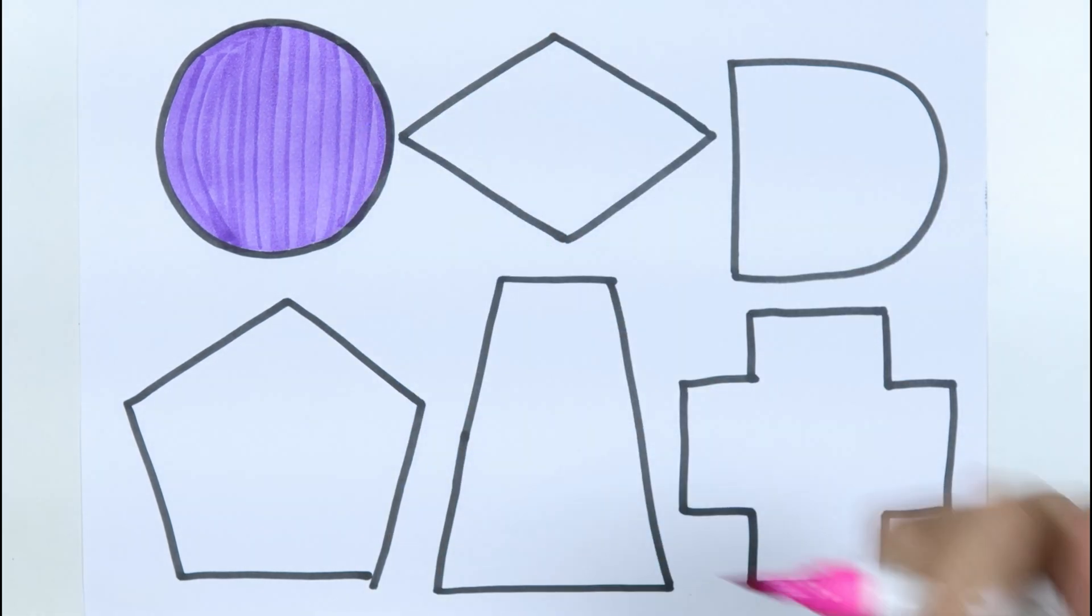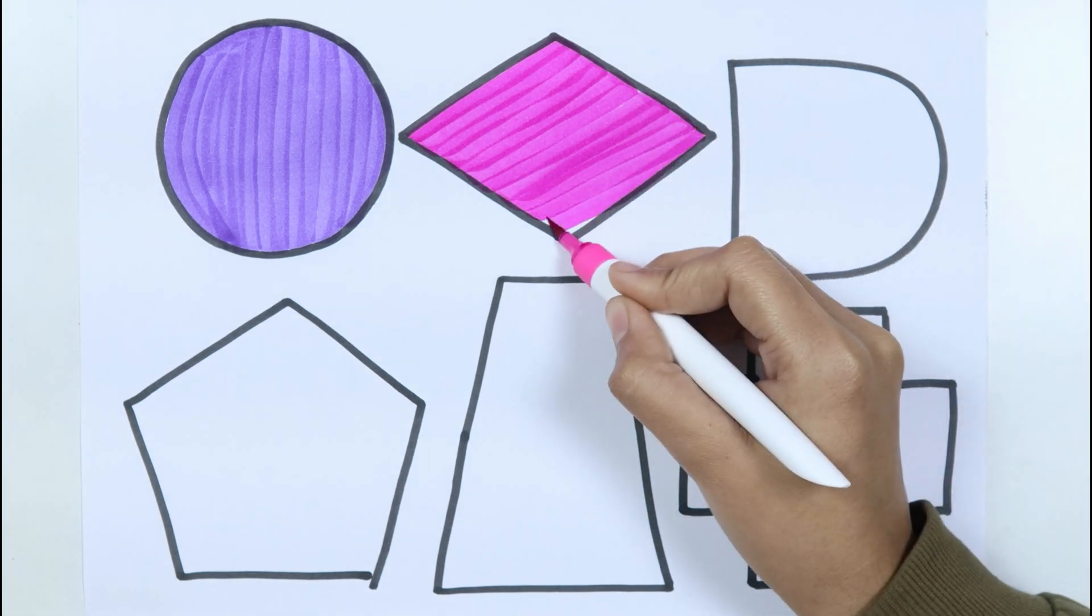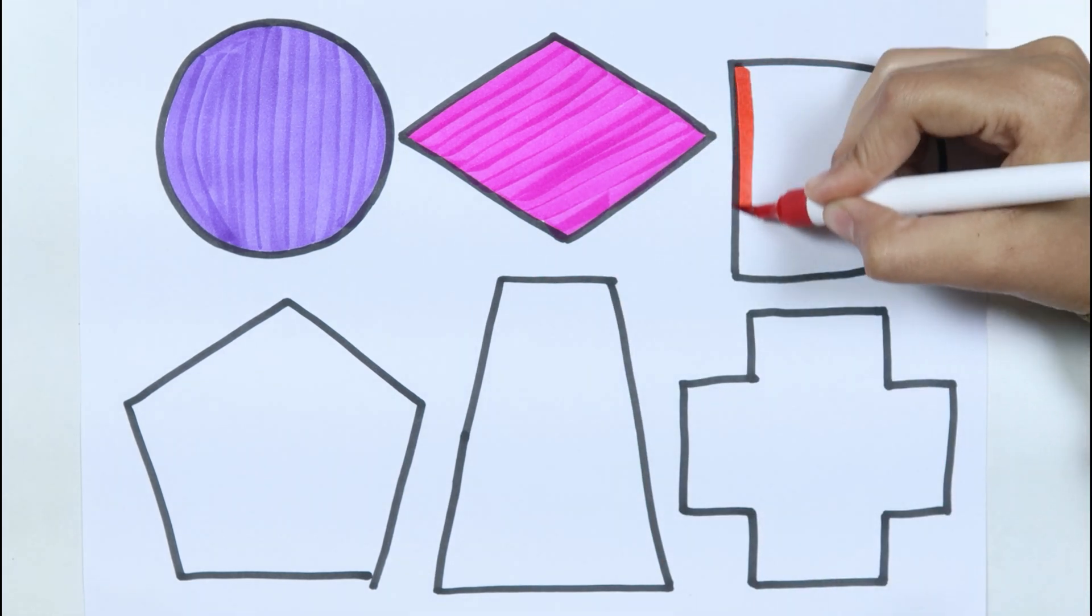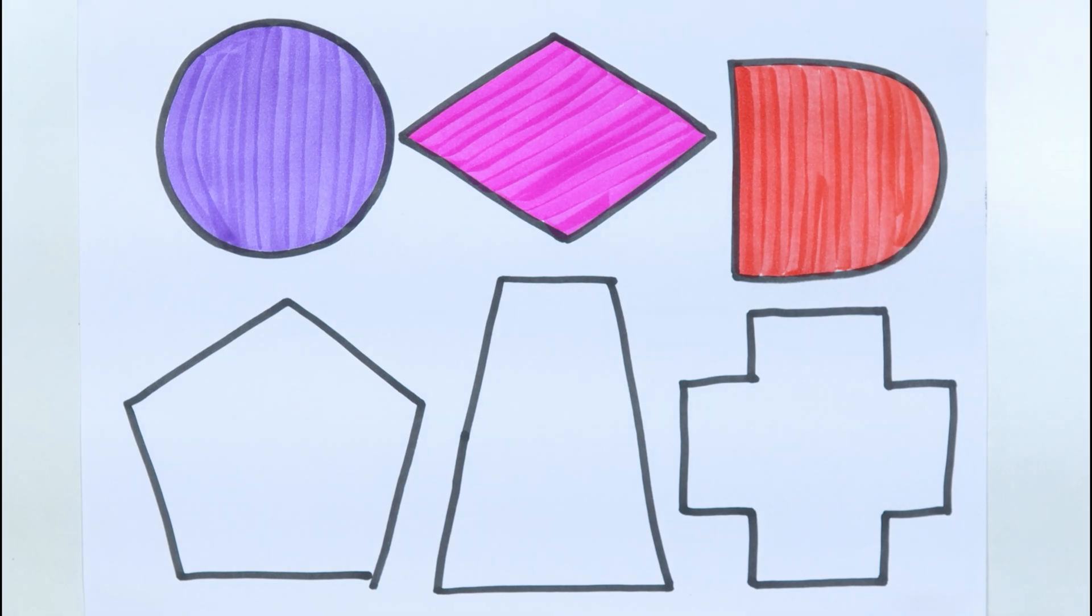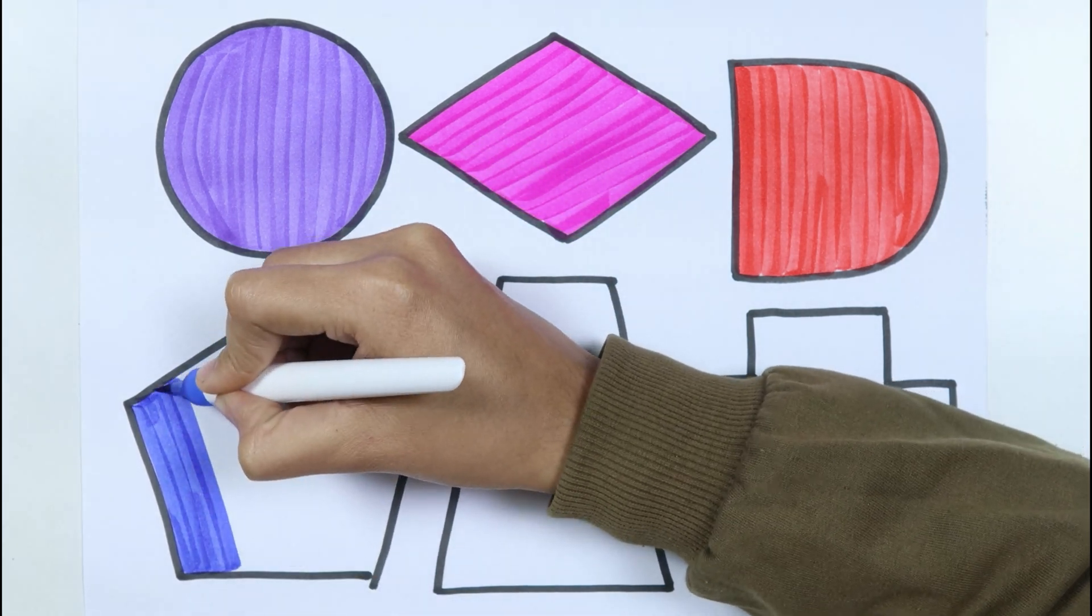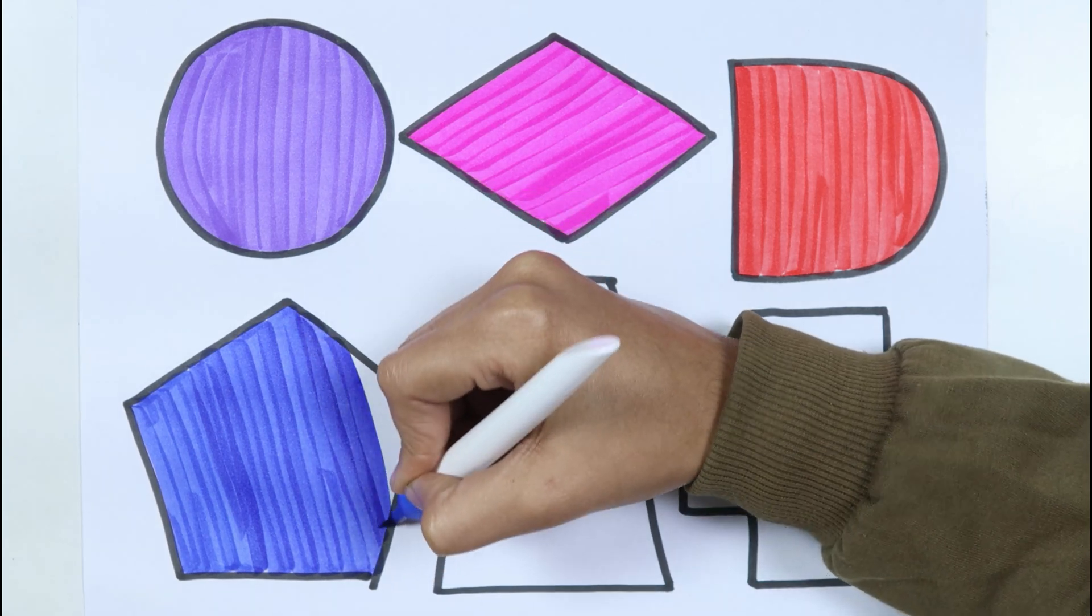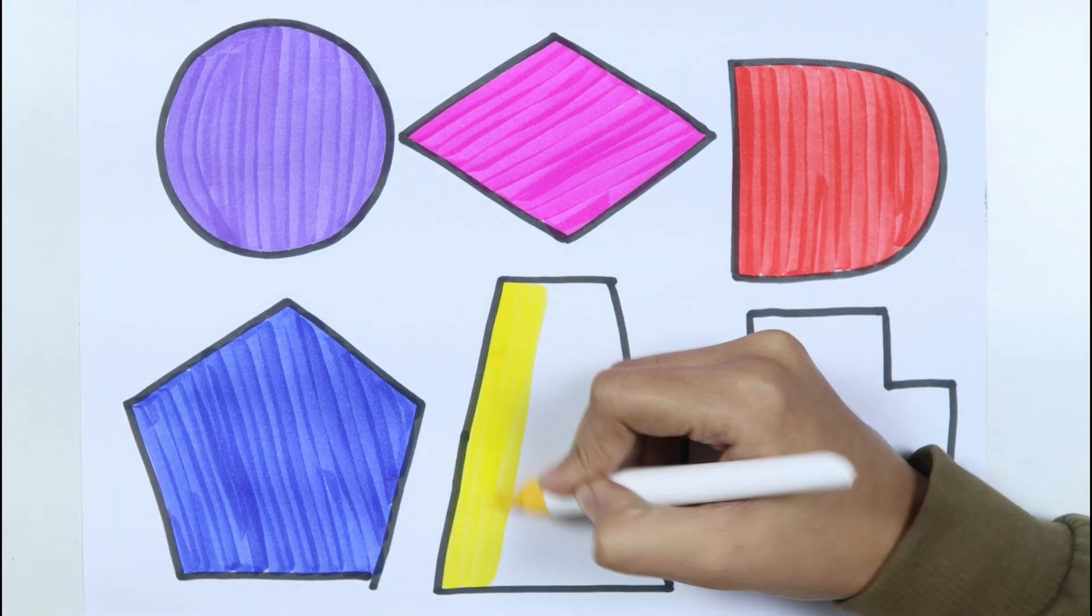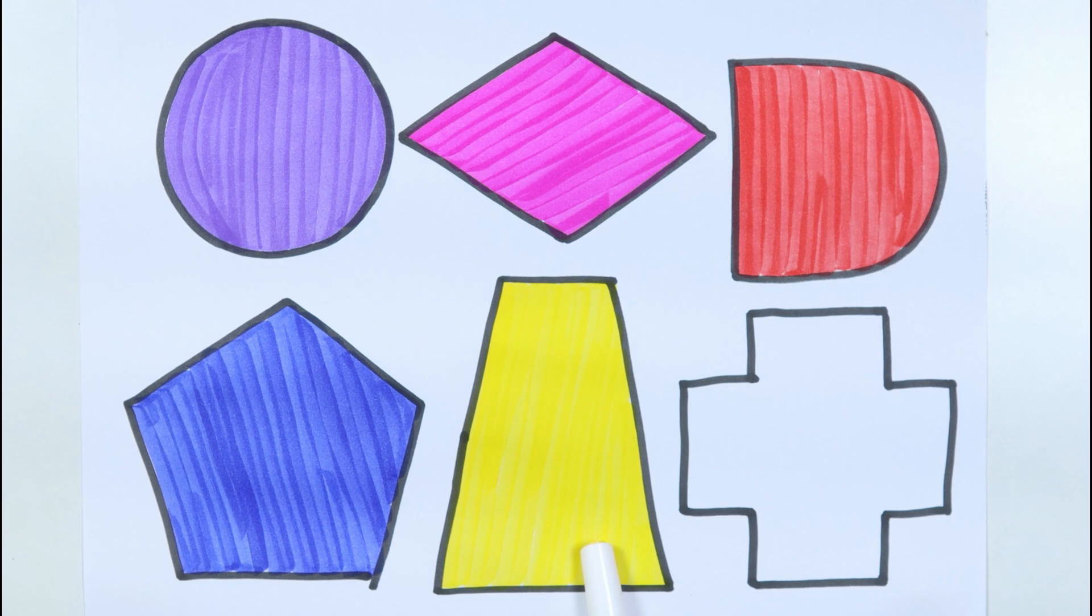Circle, pink color. Black. Red, black. Semicircle, blue color. Pentagon, yellow color. Trapeze, brown color.